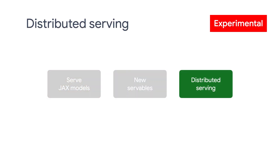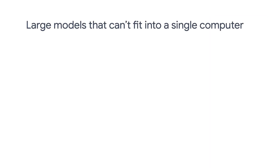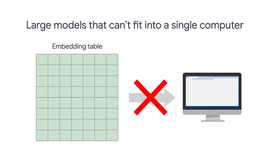The last topic for today is distributed serving. There is a clear trend to train larger and larger language models and recommendation models in the machine learning community. Many machine learning models have to make inferences over items in large corpuses of potentially billions of items. The elements of these corpuses are often represented using large embedding tables, which in the most extreme cases are too large to fit in the RAM of the host machine. Some of the biggest production models have exceeded one terabyte in size, so there's no way to fit this kind of large model into a single machine.